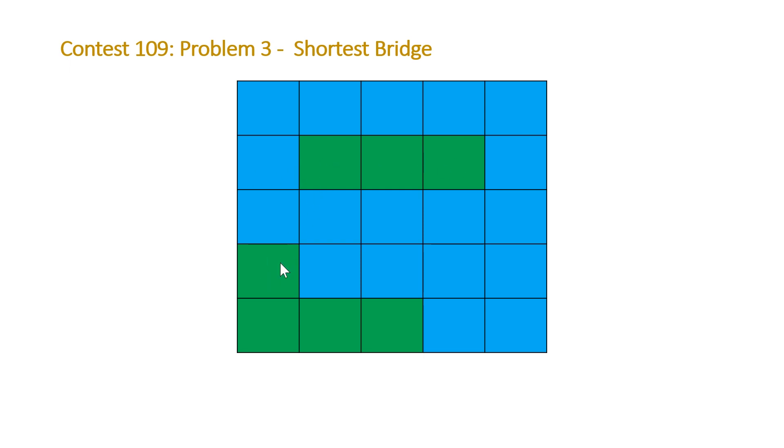This would be A times B based on the number of elements in our first island versus our second island. If we plug it into this formula here, we'll be able to calculate the distance between those two squares. So that's the first part of the problem.